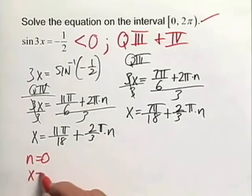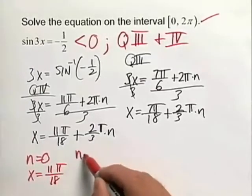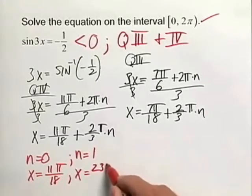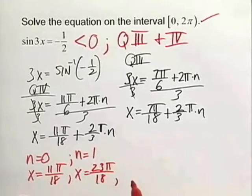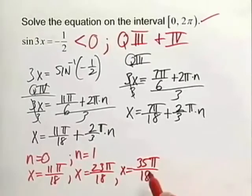When n is equal to 1, adding those together, we end up with another solution of x is equal to 23π/18ths. And finally, if we add n equals 2 there, we're going to end up with x being equal to 35π/18ths. And those are the three solutions from our first answer, x equals 11π/18ths plus 2/3 π n.